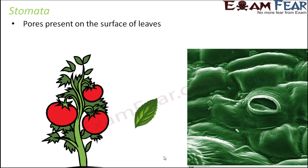Under the microscope, this is how they look. You can see this pore — and this pore is nothing but stomata. These pores are very important because if gaseous exchange cannot take place, if exchange of oxygen and carbon dioxide does not take place, the process of photosynthesis will not be able to occur, because for photosynthesis we need carbon dioxide. Similarly, as a result of photosynthesis, oxygen gets released. So whatever is needed comes in, and whatever is not needed goes out — this exchange happens through stomata.